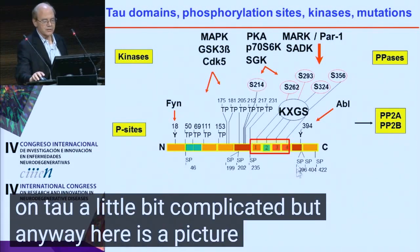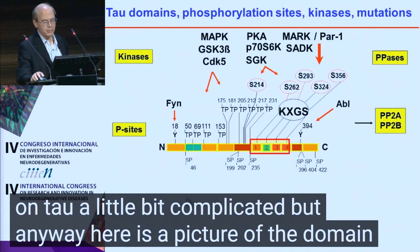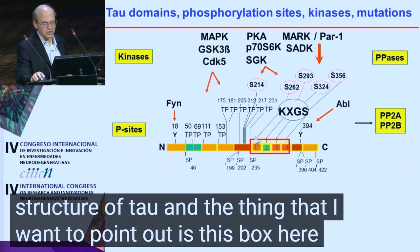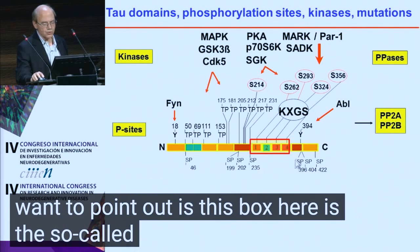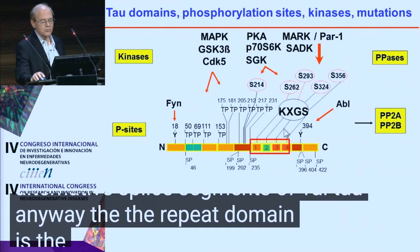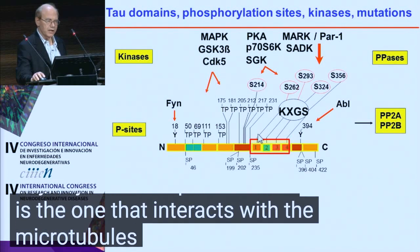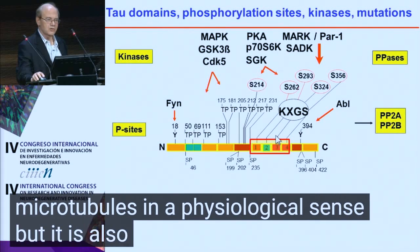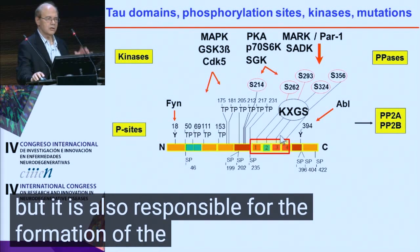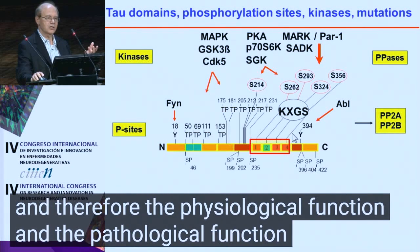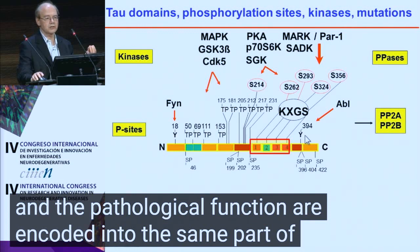Here is a picture of the domain structure of tau. The box here is the so-called repeat domain — three or four repeats. The repeat domain is the one that interacts with the microtubules in a physiological sense, but it is also responsible for the formation of pathological aggregates. Therefore, the physiological function and the pathological function are encoded into the same part of the molecule.